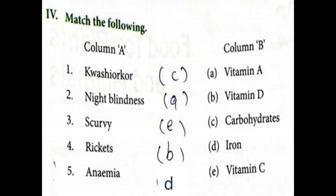Match the following. Kwashiorkor — carbohydrates. Night blindness — vitamin A. Scurvy — vitamin C. Rickets — vitamin D. Anemia — iron.